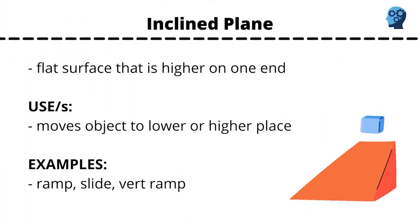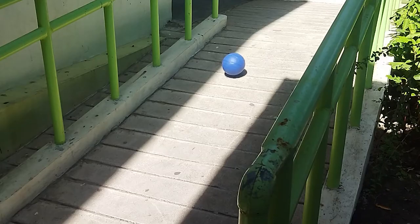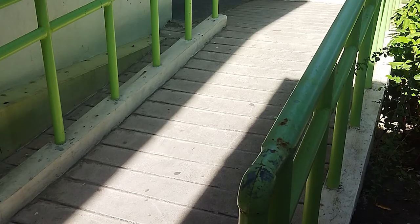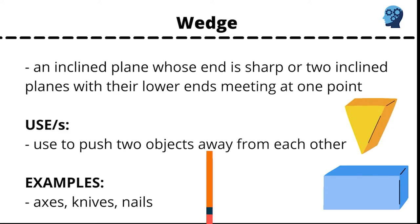Inclined plane. A flat surface that is higher on one end. You can use this machine to move an object to a lower or higher place. Ramps are a good example of an inclined plane.